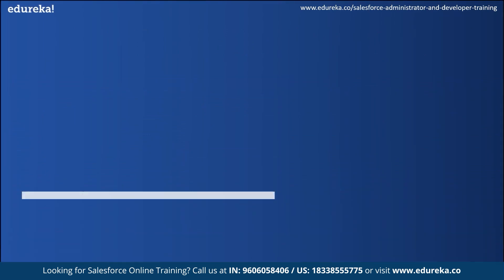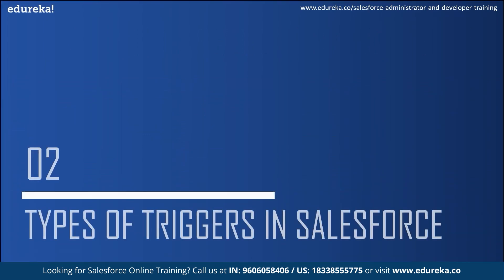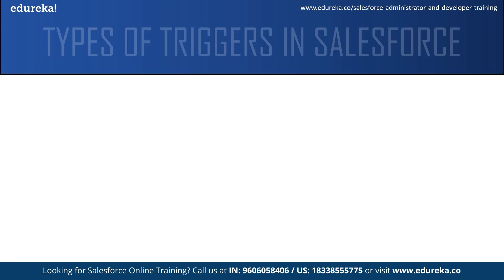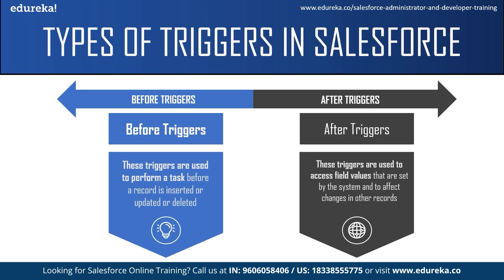There are two types of triggers in Salesforce. The first is the before trigger and the second is the after trigger. Before triggers are used to perform a task before a record is inserted, updated, or deleted. These triggers are usually used to update or validate record values before they are saved to the database.